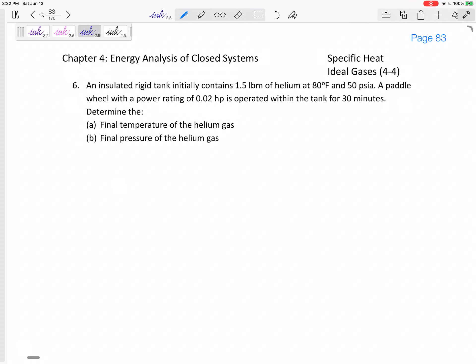All right, let's look at this one. An insulated rigid tank initially contains 1.5 pound mass of helium at 80 degrees Fahrenheit, 50 PSI. A paddle wheel with power rating of 0.02 horsepower is operated within the tank for 30 minutes to determine the final temperature of the helium gas and the final pressure of the helium gas.